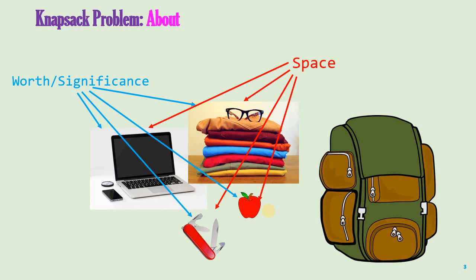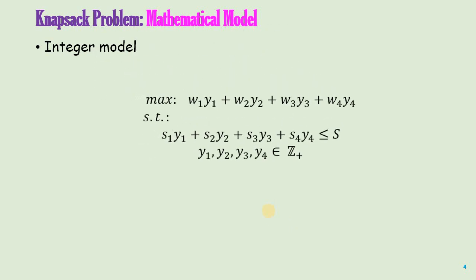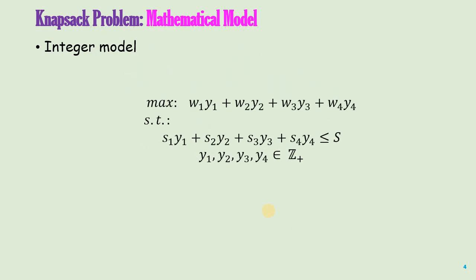This Knapsack Problem can be written as a linear integer model. Here is the standard description of the Knapsack Model. It is a maximization of a linear function subjected to a single linear constraint. In addition to that, the variables Y1, Y2, Y3, Y4 come from integers.